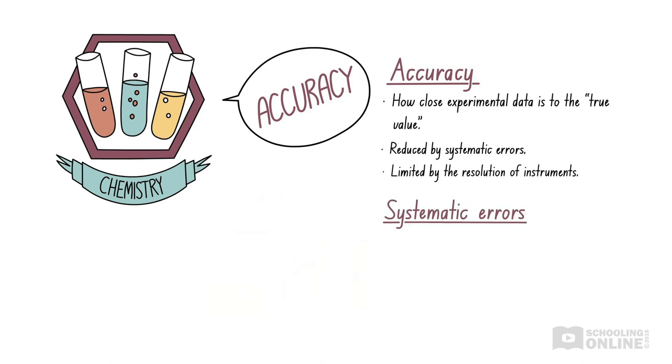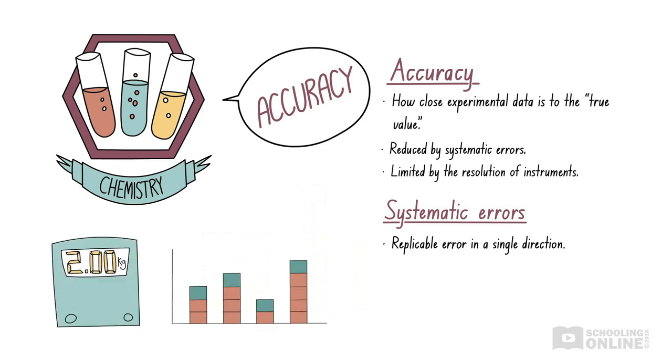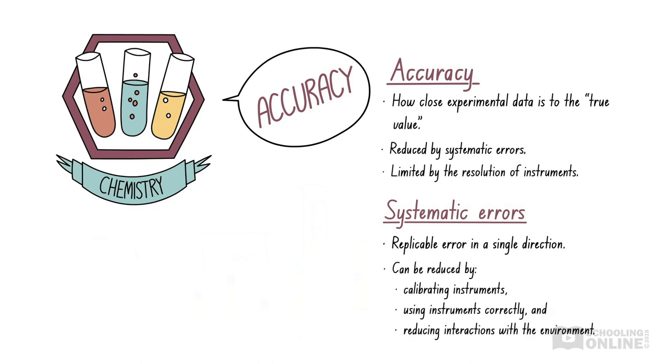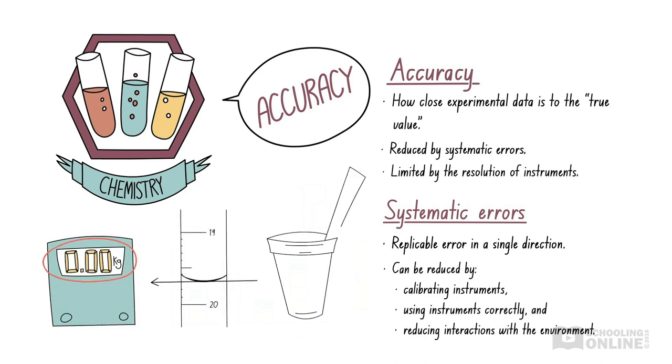Systematic errors are repeated, reproducible errors that are consistently in the same direction. We can reduce systematic errors by ensuring all measuring instruments are calibrated, the instruments are used correctly and reducing any interactions with the environment.